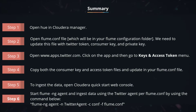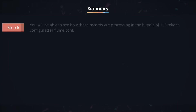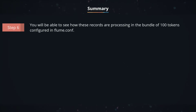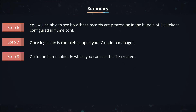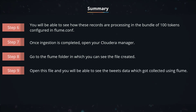Step 6: Start the flume-ng agent and ingest data using the Twitter agent as per flume.conf using the command: flume-ng agent -n twitteragent -c conf -f flume.conf. You will be able to see how these records are processing in bundles of 100 tokens configured in flume.conf. Step 7: Once ingestion is completed, open your Cloudera Manager. Step 8: Go to the Flume folder where you can see the file created. Step 9: Open this file and you will be able to see the tweets data which got collected using Flume.